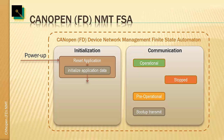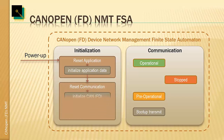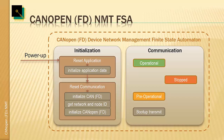From there, we go straight without delay into the reset communication block, where we finalize the initialization. Here we have the full initialization of the CAN interface; we retrieve our own network and node ID, and the entire CANopen functionality is initialized. If that was previously saved into a configuration storage area, it is also retrieved at this point. At the end of this, we leave the initialization area and go via the boot-up transmission into the pre-operational state.